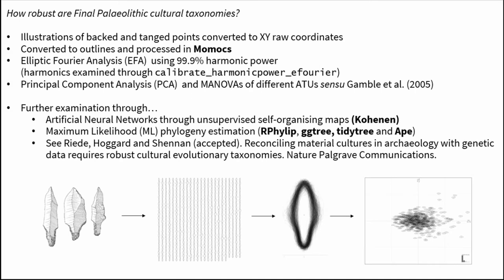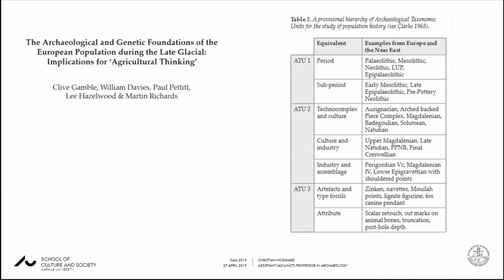While I was in one of the sessions yesterday, our paper was accepted in Nature Human Behaviour Communications, which highlights much of the theoretical framework for this — so in a few weeks that'll be published and we'd recommend it as a way of understanding the relationship between these outlines and a cultural evolutionary approach. The protocol goes: illustrations to outlines, centered, scaled, exploratory analyses, and so on. For greater clarity, the ATU framework is from Gamble et al. 2005, with different levels representing period, sub-period, techno-complex, and culture.